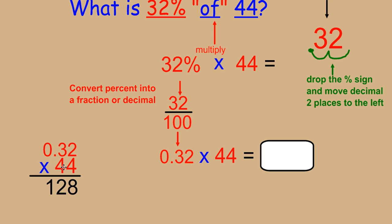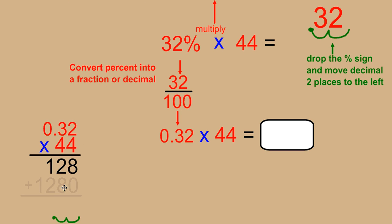And then, I'm going to do the same thing. But now, remember, this 4 is in the tens place. So it's 40 times 2 and 40 times 30. And we get 1280. When we add those numbers together, we end up with 1408.